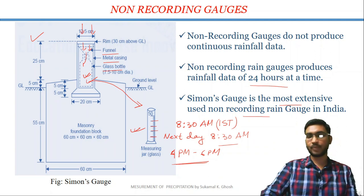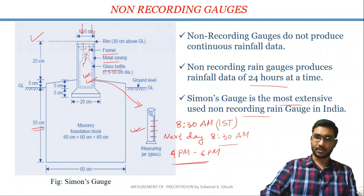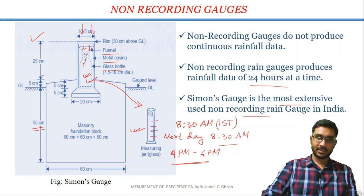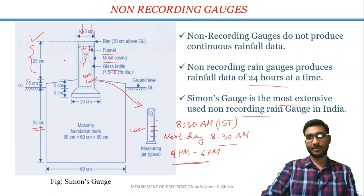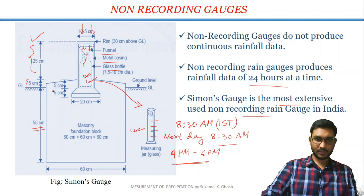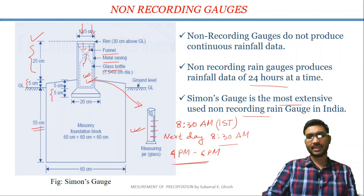Generally, the depth of the foundation below the ground level for this Simon gauge is a minimum of 50 centimetres. Above the ground level, the height of the Simon gauge is 30 centimetres — that is 25 centimetres plus 5 centimetres, total 30 centimetres. So these are the dimensions of Simon gauge.